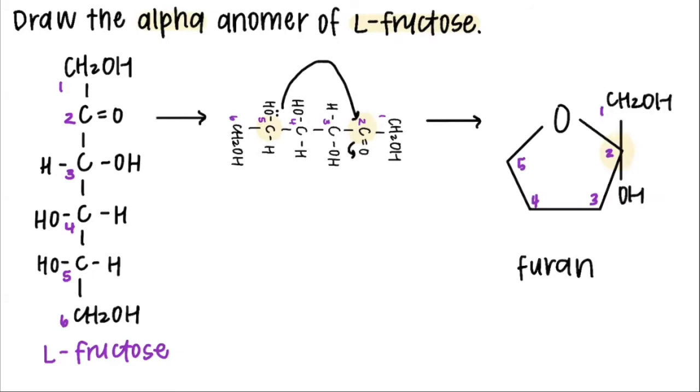Then, depending on the configuration of the anomeric carbon, we can fill in carbon number one as well. Now we go through the rest of the fissure projection and label the Hayworth correctly.